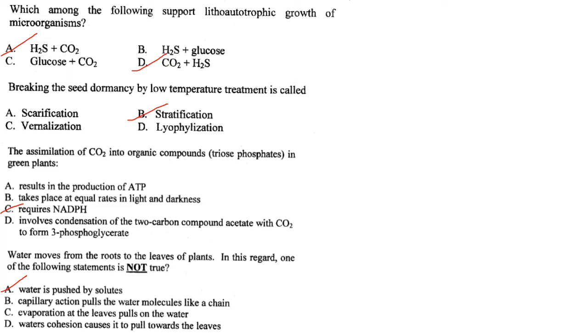The assimilation of carbon dioxide into organic compounds (triose phosphates) in green plants requires NADPH. Answer is option C.